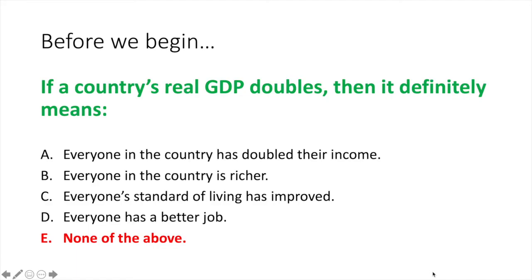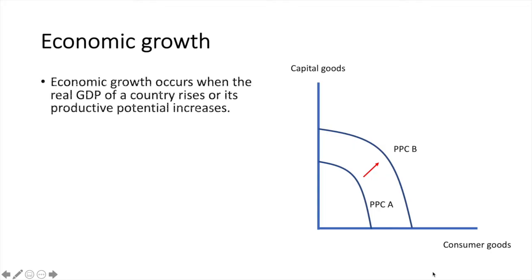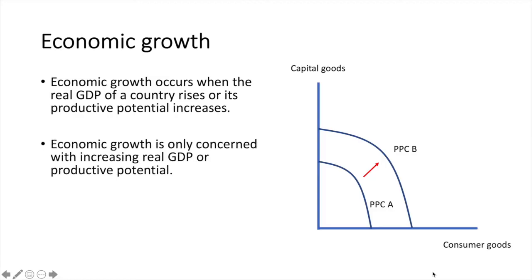Let's start with the first concept: economic growth. Economic growth occurs when the real GDP of a country rises or its productive potential increases, as shown on the right in the diagram. Economic growth is only concerned with increasing real GDP or productive potential. It's an objective measure of the size of an economy and does not include a variety of other factors that influence the standard of living in a country.